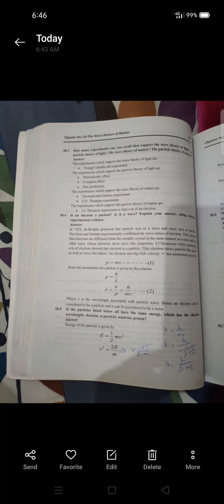Fifth short question: If the particles listed below all have the same energy, which has the shortest wavelength? The wavelength will be shortest for which one? The particles are electron, alpha particle, neutron, and proton.